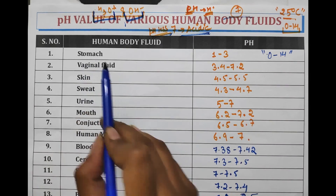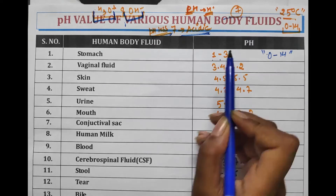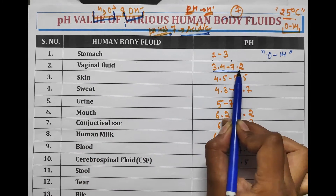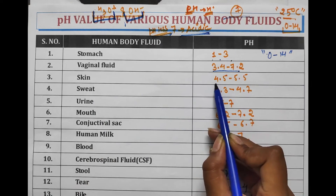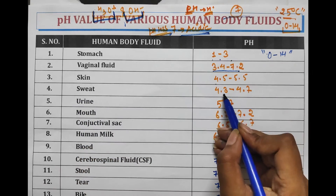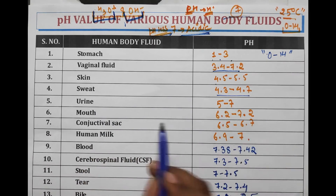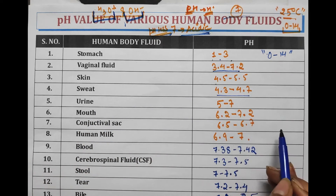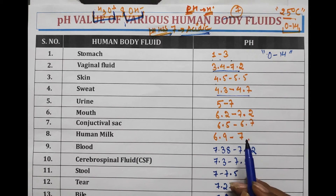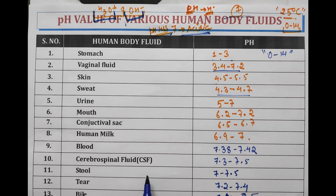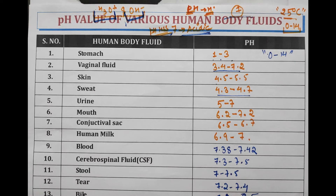Let's revise. Stomach: pH 1 to 3. Vaginal fluid: 3.4 to 7.2. Skin: 4.5 to 5.5. Sweat: 4.3 to 4.7. Urine: 5 to 7. Mouth: 6.2 to 7.2. Conjunctival sac: 6.5 to 6.7. Human milk: 6.9 to 7.2. Blood: 7.38 to 7.4. Cerebrospinal fluid: 7.3 to 7.5. Stool: 7.2 to 7.5. Tear: 7.2 to 7.4. Bile: 7.4 to 8.5.